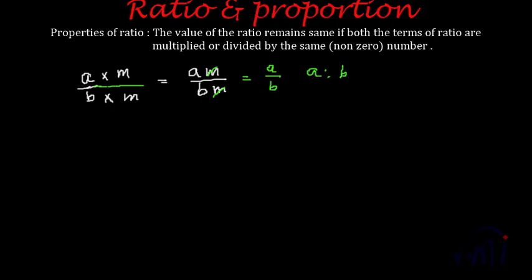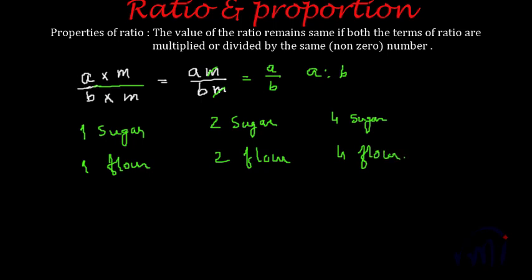Suppose again we take the example of cake. Suppose we were taking one cup of sugar and one cup of flour. If I want to make a cake of double the size, I can simply make it two cups of sugar and two cups of flour. This will make a cake of double the size of the original cake. And if I take four cups of sugar and four cups of flour, this will make four times the size of the cake. But in all cases, the ratio between sugar and flour remains same.